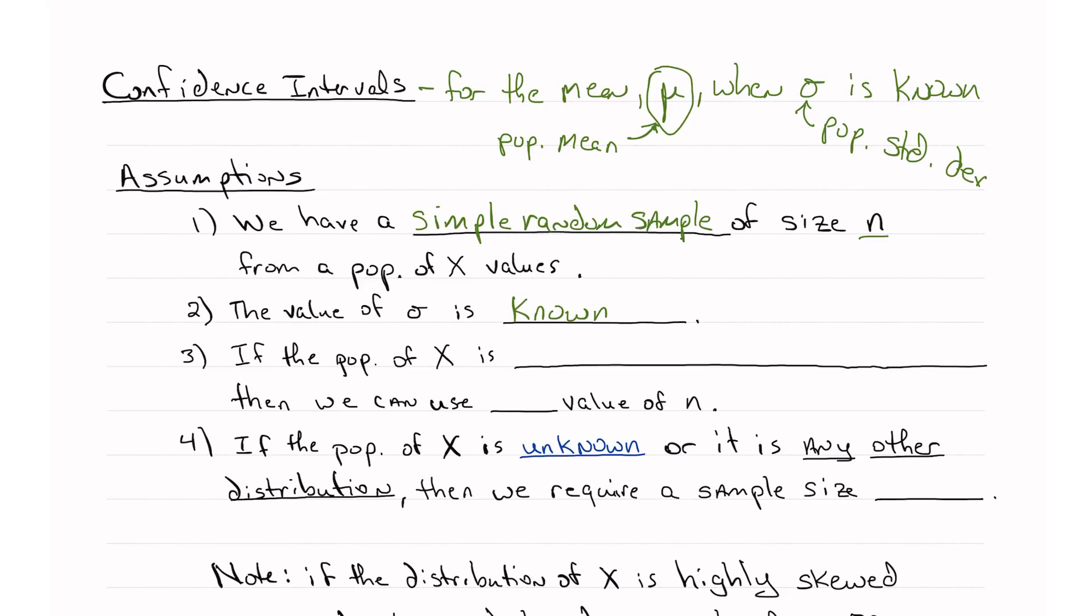So if the population of x is normally distributed, then we can use any value of n with the formulas that we're going to cover. Now, from the central limit theorem, if the population of x is either unknown or it is any other distribution, then we need a minimum sample size of 30. So n has to be greater than or equal to 30.